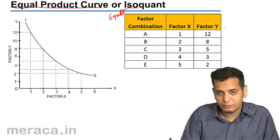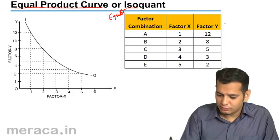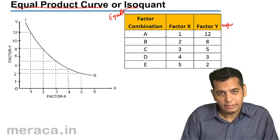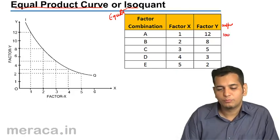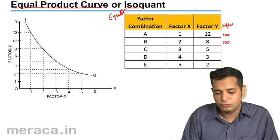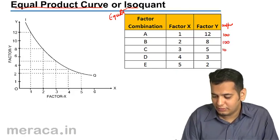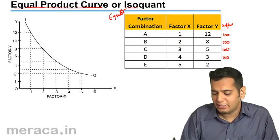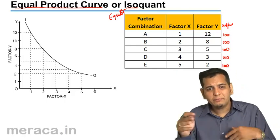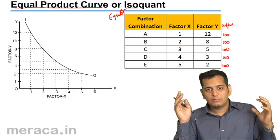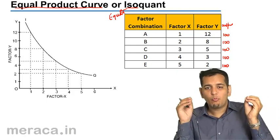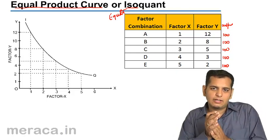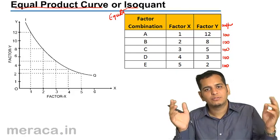In the isoquant schedule, all combinations give you the same level of output — 100 units. At combination A, I am using one unit of Factor X and 12 units of Factor Y, and with this combination I can produce 100 units.